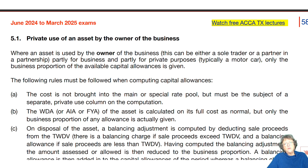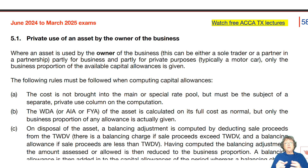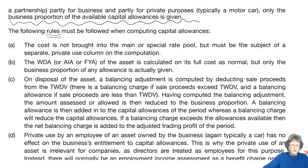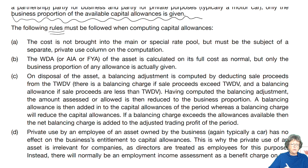Private use assets usually involve a car owned by the owner of the business, where they use that car for private use. We will adjust the profits for that private use, and when claiming capital allowances for that car, part of it is being used privately. Therefore we cannot claim full tax relief — only the business proportion of the available capital allowances is given. The cost is not put into the main or special rate pool; it has a separate private use column.